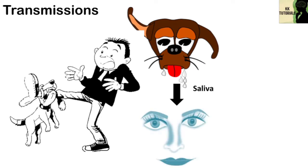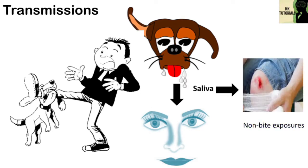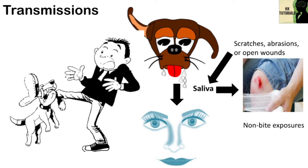It can also transmit rabies through contact with the mouth or nose. It is also possible but rare for people to get rabies from non-bite exposures, which can include scratches, abrasions, or open wounds that are exposed to saliva or other potentially infectious material from a rabid animal. Other types of contact such as petting a rabid animal or contact with the blood, urine or feces of a rabid animal are not associated with risk for infection and are not considered exposures of concern for rabies.